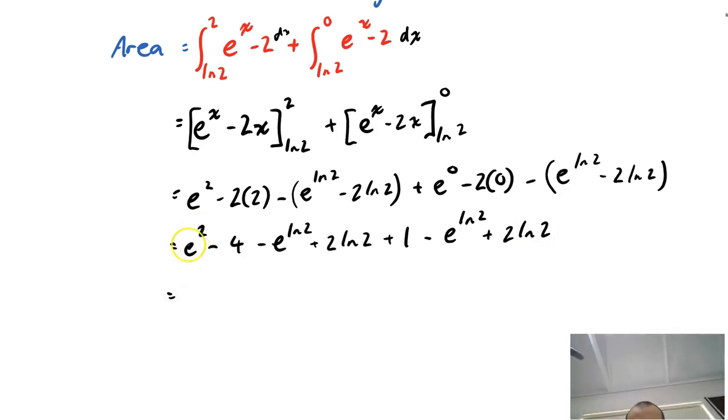so we have an e squared, the only one of its kind. We have a negative e ln2. We have another negative e ln2. So we have negative 2 e ln2. Just tick these off as I go.